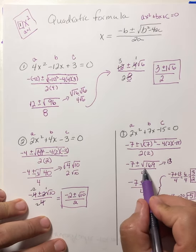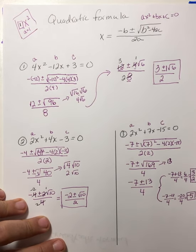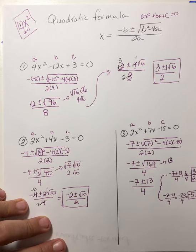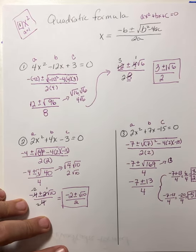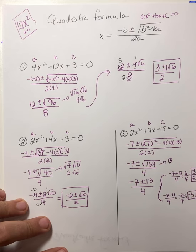We got lucky on this one — we had a perfect square, 169. All right folks, so we just did the quadratic formula. In your assignments for the week, you have six questions to do — six and six. Good luck with your assignment.